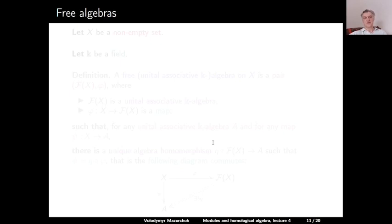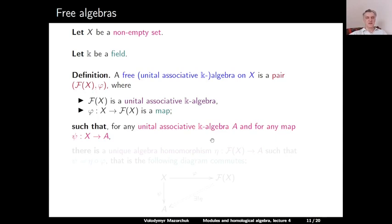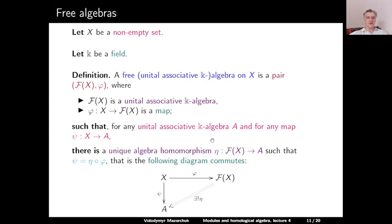Next, let us discuss free algebras. Let X be a non-empty set and let k be a field. A free unital associative k-algebra on X is a pair consisting of a unital associative k-algebra F(X) and a map φ from X to F(X), such that for any unital associative k-algebra A and any map ψ from X to A, there is a unique algebra homomorphism η from F(X) to A such that ψ equals η after φ.